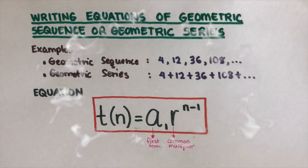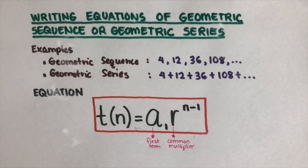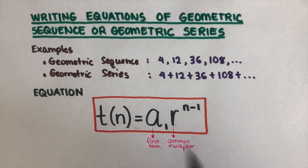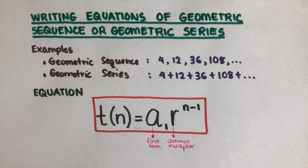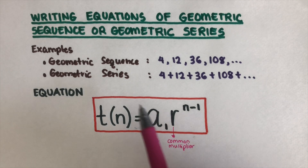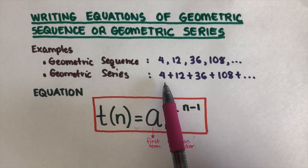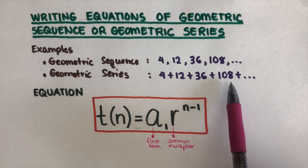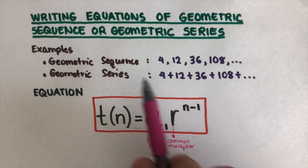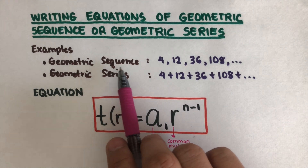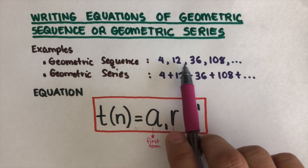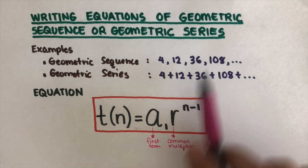Hello everyone. Today we will be writing equations of geometric sequences or geometric series. We have an example here to better understand what a sequence is and what a series is. A series has a plus sign in between the terms, while a sequence has just a comma in between the terms.